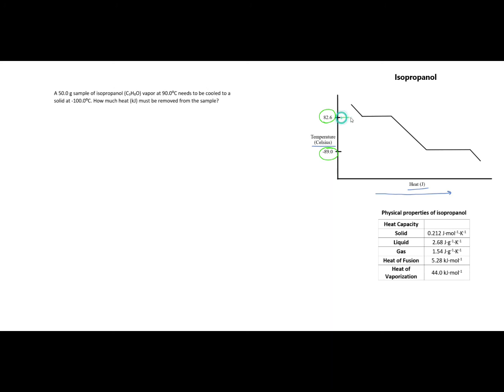You'll notice on the y-axis we are given two very specific temperatures: 82.6 and negative 89 degrees Celsius. That corresponds with these plateaus here, which means it corresponds with phase changes. This 82.6 is our condensation point where we move from vapor to liquid, and negative 89 is our freezing point where we go from liquid to solid.